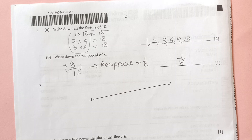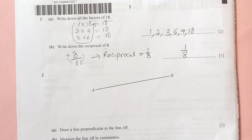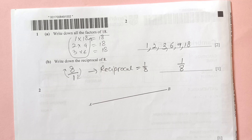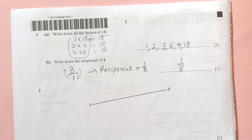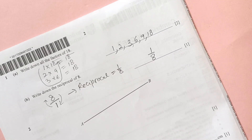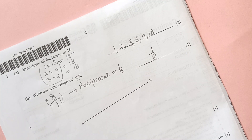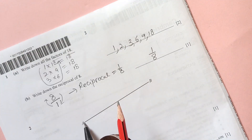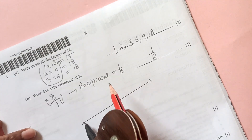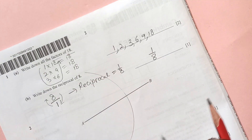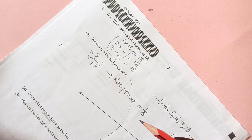Number 2: draw a line perpendicular to AB. This is just a perpendicular, not necessarily a perpendicular bisector. Take your compass, put the needle on one edge, and open it more than half the length of the line.